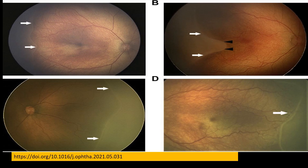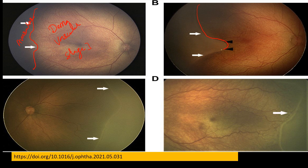Now let us look at some real-life pictures. In the first picture you can see a thin flat demarcation line, with avascular retina anteriorly and vascularized posterior retina — this is stage one ROP. In the second picture we have a line extending like a notch near zone one, which is zone one ROP secondary to notch, but it is still stage one because we are seeing a demarcation line.